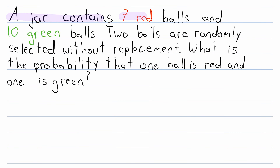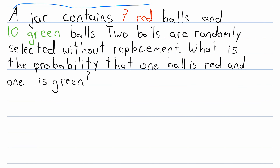A jar contains seven red balls and 10 green balls. Two balls are randomly selected without replacement. What is the probability that one ball is red and one is green? This example works very similarly to the one we just did, but it's a little more complicated because there are two ways this could happen: the first ball could be red and the second ball green, or the first ball could be green and the second ball red. So you'll have to account for both of those possibilities. Let me know what you get down in the comments, and I'll leave the solution in the description.